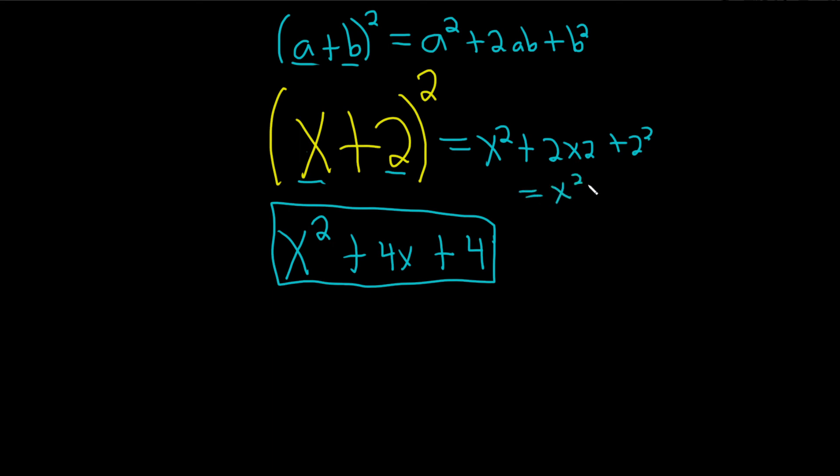So this is X squared plus 4X plus 4. So again, square the first one, multiply the X into 2, so 2X, and then double it, so 4X, square the last one. Super powerful technique. I hope this video has been helpful.